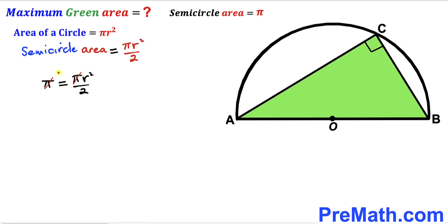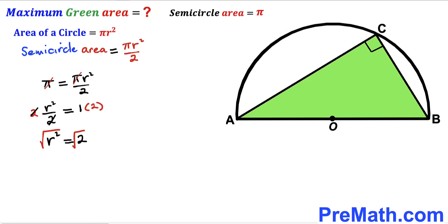The pi's cancel, giving us r squared divided by 2 equals 1. Multiplying both sides by 2, we get r squared equals 2. Taking the square root of both sides, the radius r turns out to be the square root of 2 units.